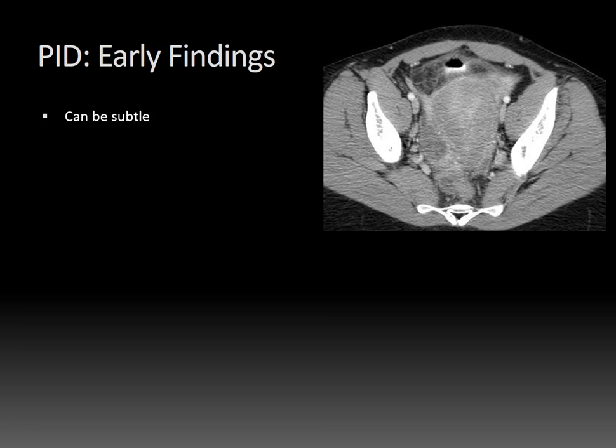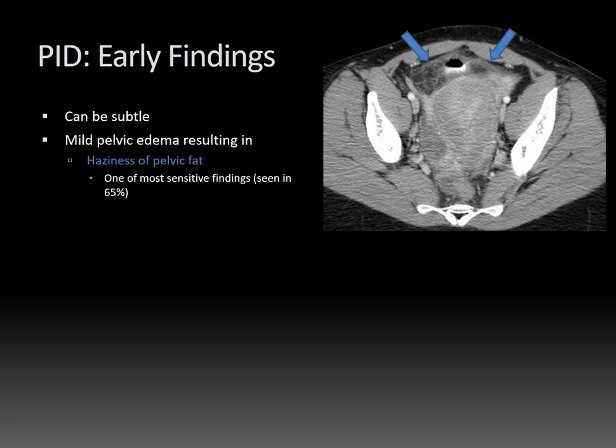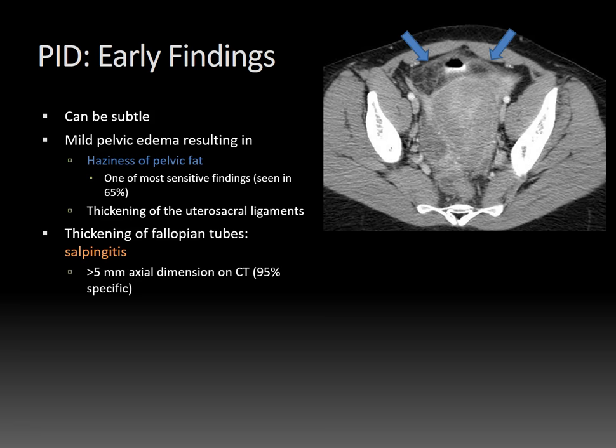Let's talk about the early findings of PID — they can be subtle. You might see mild pelvic edema resulting in haziness of the pelvic fat, as you can see here. This is actually one of the most sensitive findings, seen in 65% of patients. You can also see thickening of the uterosacral ligaments. The fallopian tubes themselves can become thickened in the setting of salpingitis, and studies have shown that greater than 5 mm in axial dimension on CT is actually 95% specific for salpingitis.